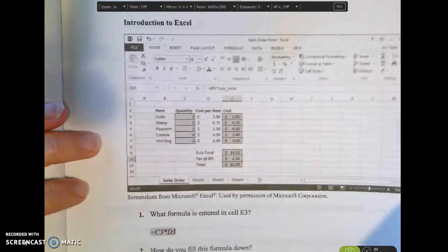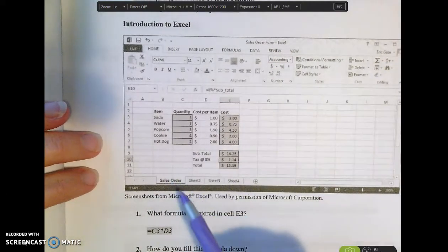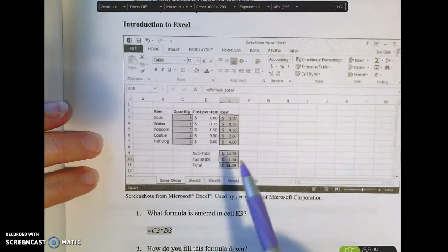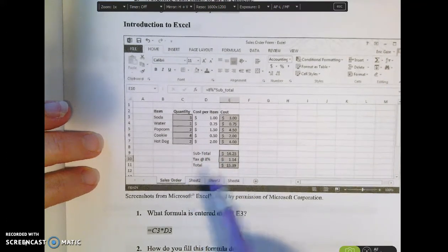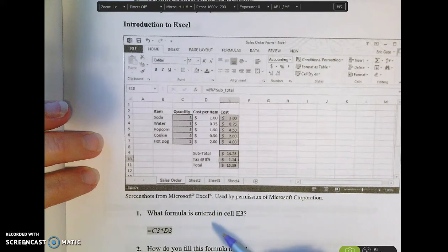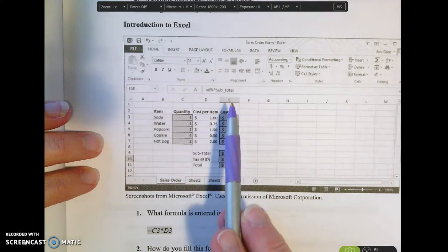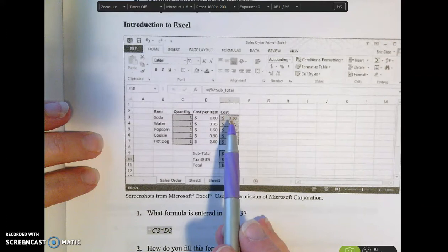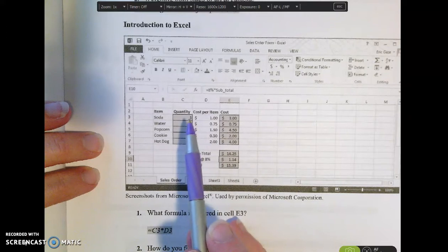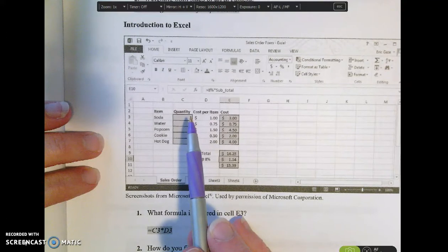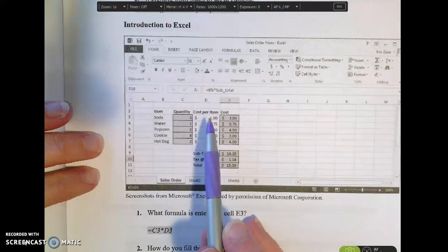So one of the things that you did in the introduction section was you created a spreadsheet on the sales order form and you had to follow along with the videos to create this. Some of the things that you need to make sure you know how to do are things like how to enter a formula. So cell E3 is where the $3 is, and E3 is obtained by multiplying the quantity times the cost. So the quantity is in cell C3 and the cost is in cell D3.